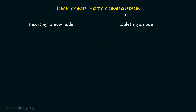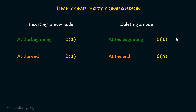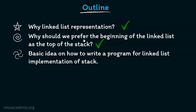Let's see the time complexity comparison. Inserting a new node at the beginning takes constant time, and deleting a node at the beginning also takes constant time. Inserting a new node at the end takes constant time, but deleting a node at the end takes O(n) time. That's why we must prefer adding a new node at the beginning and removing the first node — these are faster operations. Now we have got the idea why we should prefer the beginning of the linked list as the top of the stack.